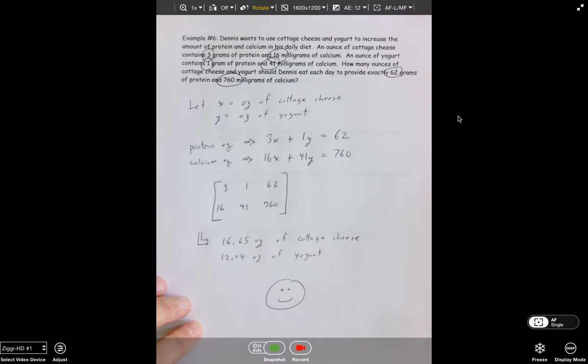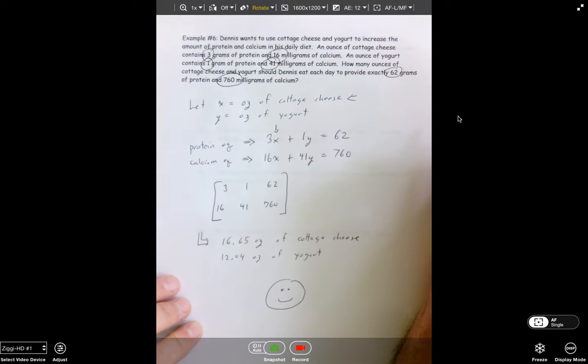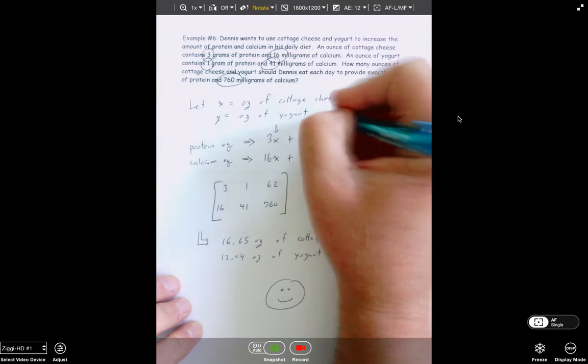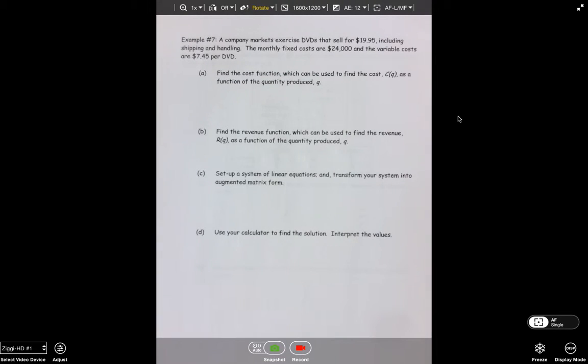Now I want to make sure I didn't make a mistake in creating this. So I needed 3 and 1 and 62. I needed 16, 41, and 760, which I have. So guys, even though it didn't turn out right, I feel good about this answer. I've added protein plus protein to get protein, calcium plus calcium to get calcium. I have my columns equal to cottage cheese which I need. I've got this column equal to my yogurt which I need. Guys, I trust that final answer.